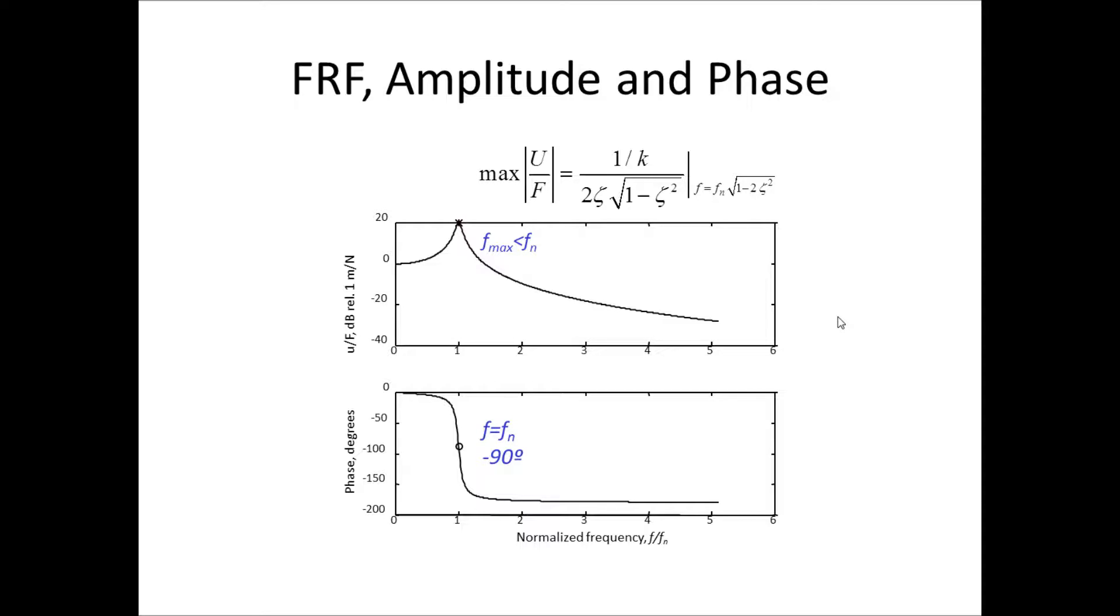but another frequency, which is the natural frequency times the square root of 1 minus 2 zeta squared. You should also notice that in the phase plot, that the phase is exactly minus 90 degrees where frequency is equal to the natural frequency.